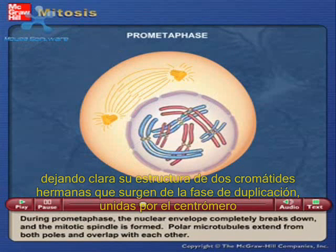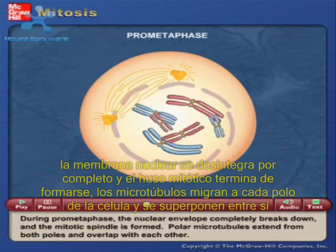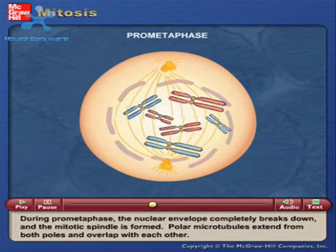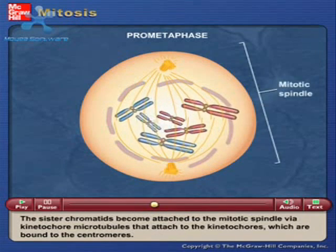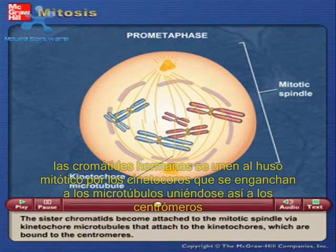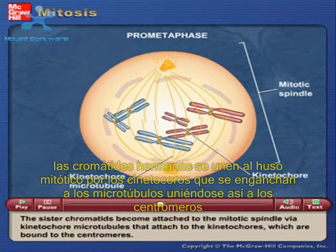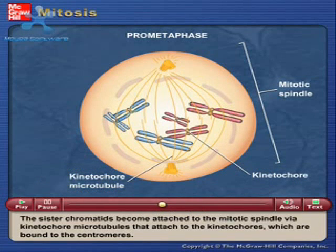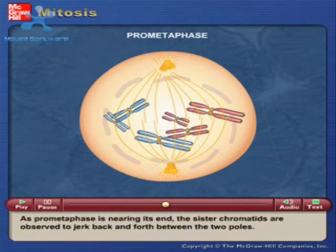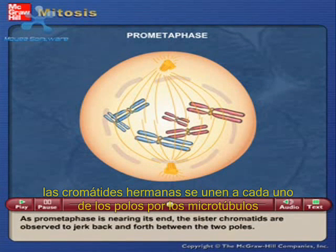During prometaphase, the nuclear envelope completely breaks down and the mitotic spindle is formed. Polar microtubules extend from both poles and overlap with each other. The sister chromatids become attached to the mitotic spindle via kinetochore microtubules that attach to the kinetochores, which are bound to the centromeres. As prometaphase is nearing its end, the sister chromatids are observed to jerk back and forth between the two poles.